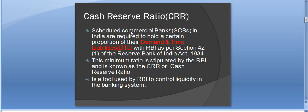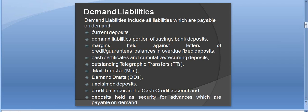CRR: Scheduled commercial banks in India are required to hold a certain proportion of their demand and time liabilities with RBI, as per Section 42.1 of the RBI Act 1934. The minimum ratio is stipulated by RBI and is known as CRR, or Cash Reserve Ratio. It is a tool used by RBI to control liquidity in the banking system.